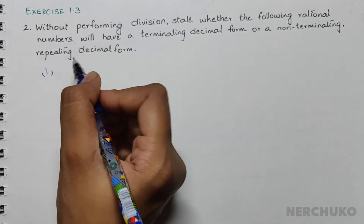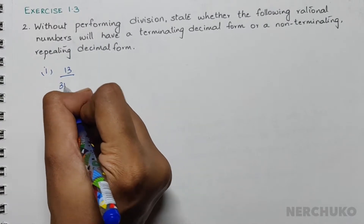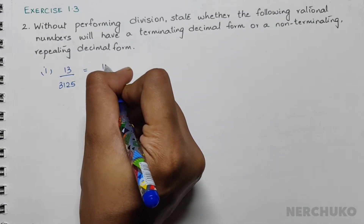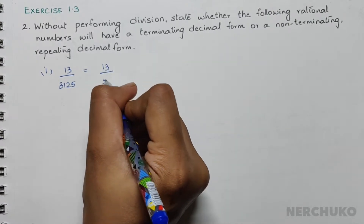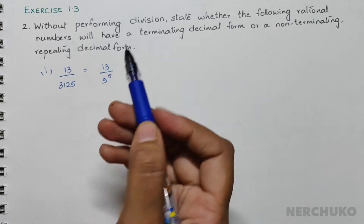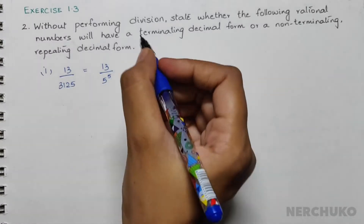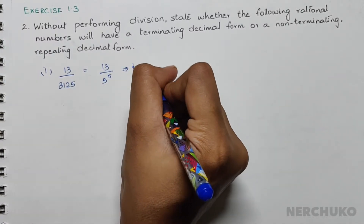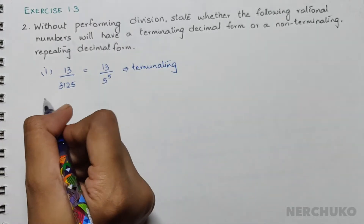For the first bit, we have 13 divided by 3125. The denominator can be written as 5 to the power 5. Since the denominator is in the form of 2^n × 5^m, we can simply say that this is a terminating decimal.